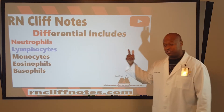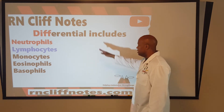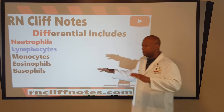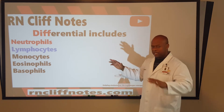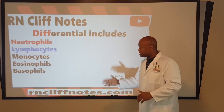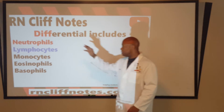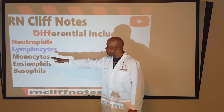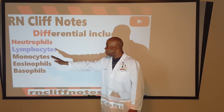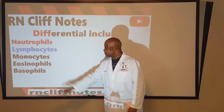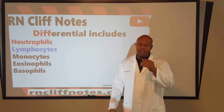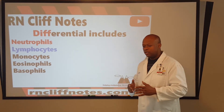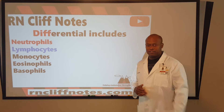When we talk about a differential, we're talking about other types of cells in more detail. We're not stopping at red blood cells — erythrocytes and leukocytes. We're going deeper, talking about neutrophils, which are segments of the white blood cells, lymphocytes, monocytes, eosinophils, and basophils. We're just taking you deeper, Cliff Notes style.